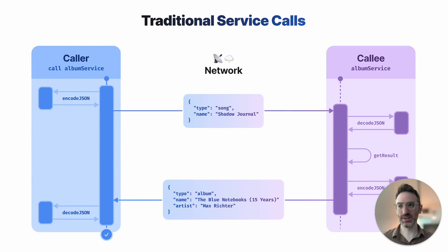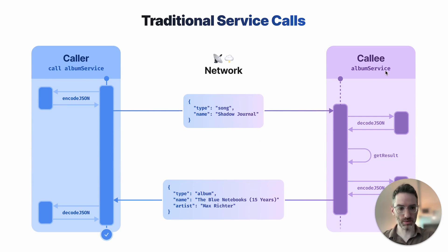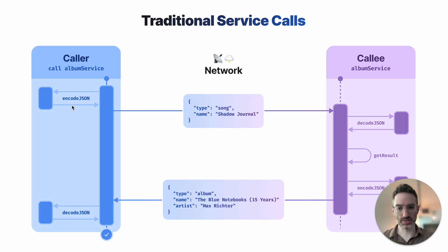Let's look at how service calls typically work. Traditionally, when you make a service call, you are crossing a network boundary. You have the caller and the callee running in two different containers, and the caller is going to need to take the argument, encode that, and send it over the network.